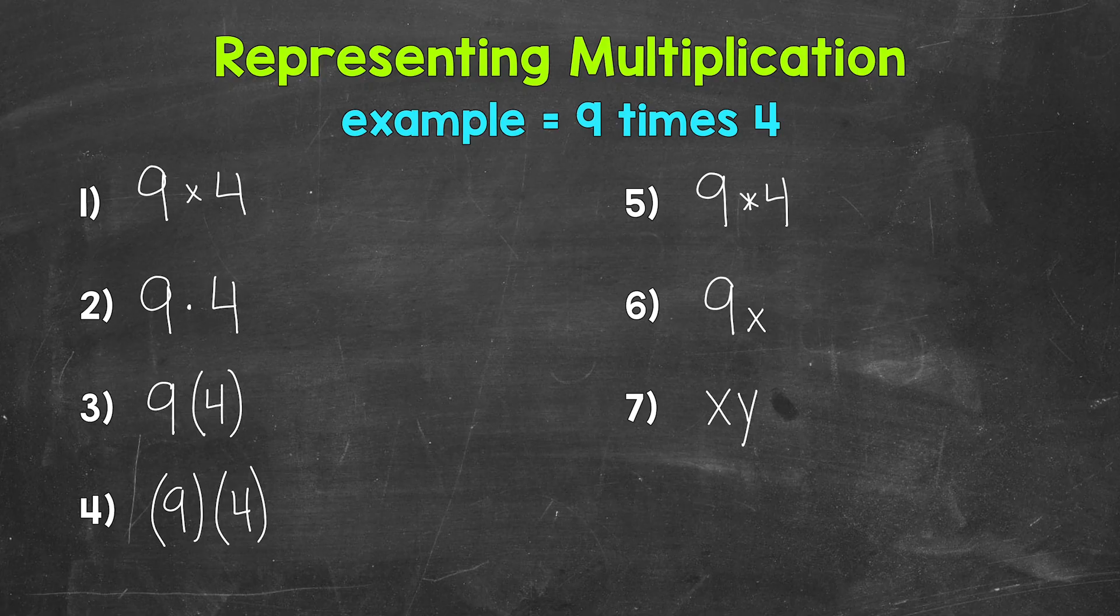Now this goes for any variables. They don't have to be an x and a y. Variables next to each other represent multiplication. And it can even be more than two variables. For example, xyz would be x times y times z. So again, variables next to each other represent multiplication.